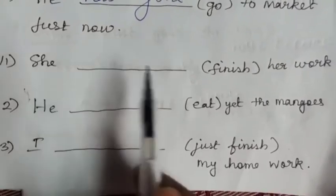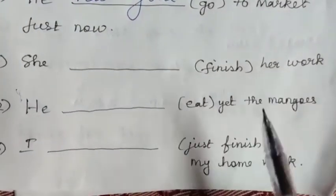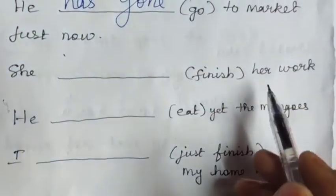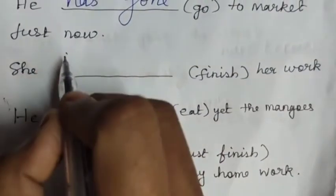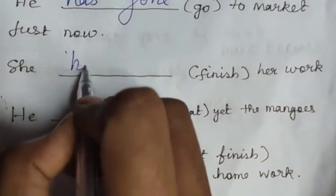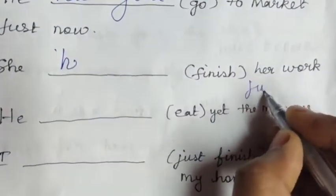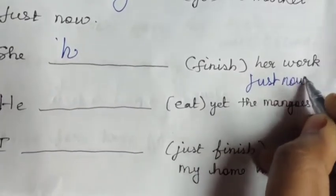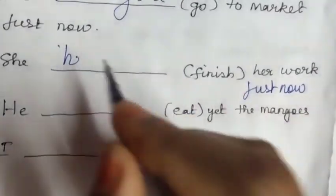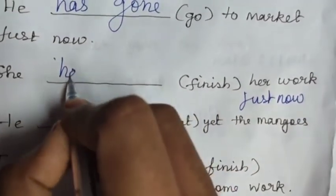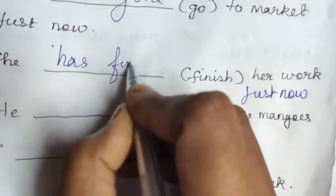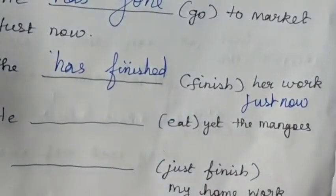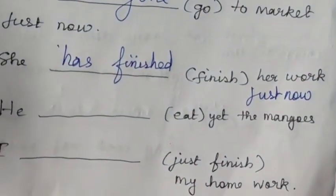Eleventh: 'She dash finish her work just now.' 'She' is singular, so 'has'. Finish-finished; verb 3 is 'finished'. 'Just now' comes at the end. Answer: 'She has finished her work just now.'